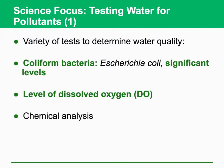Water pollution is a big problem, so we have to test water for pollutants. There are a variety of tests to determine water quality. For instance, coliform bacteria are used to measure the level of pathogens in the water. The level of dissolved oxygen is also measured, and we also carry out some chemical analysis.